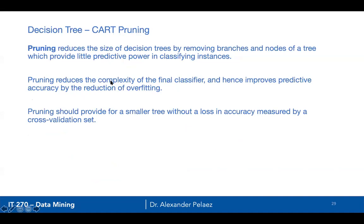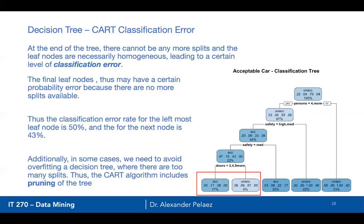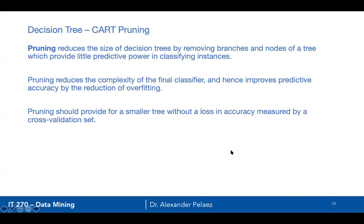Pruning reduces the size of a decision tree by removing branches and nodes that don't have as much predictive power when classifying the categorical variable. If you had a tree with 15 or 20 levels, pruning allows you to reduce the size with no — or very minimal — loss in accuracy. Do I really need to go down to seven or eight levels? Can I do just as well with level three or four? That's what pruning is.